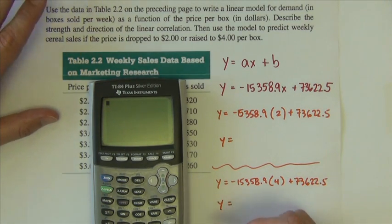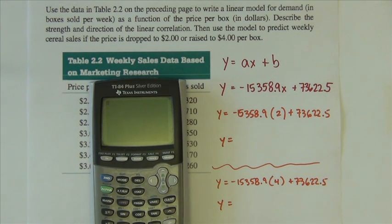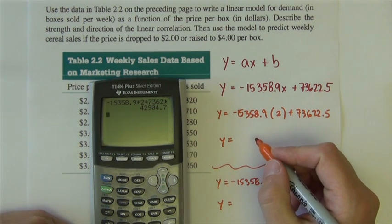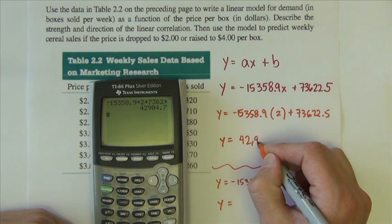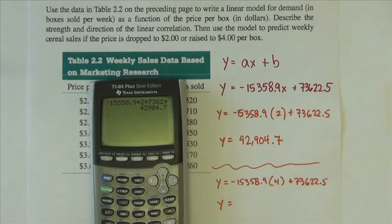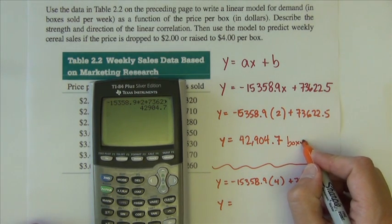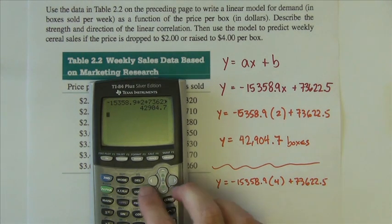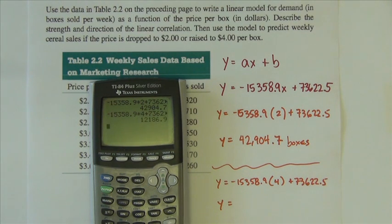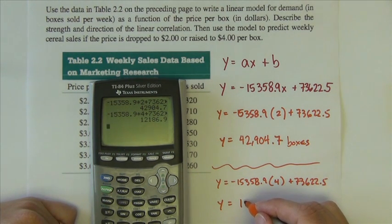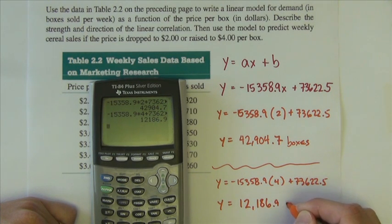So it's just going to require the use of the calculator - negative 15,358.9 times 2 plus 73,622.5. So if we drop it to $2 we're going to sell 42,904.7 boxes. Let's put our units on there. What if we raise the price? I'm just going to edit my 2 to a 4 - it tells us we would sell 12,186.9 boxes.